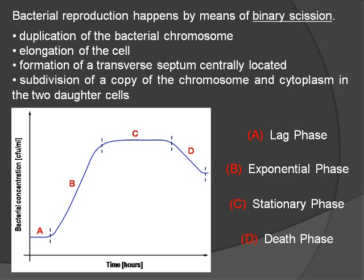The growth of a bacterial population can be divided into the following four phases. During the lag phase, bacteria adapt themselves to growth conditions. It is the period where individual cells are maturing and are not yet able to divide. During the lag phase of the bacterial growth cycle, synthesis of RNA, enzymes, and other molecules occurs.